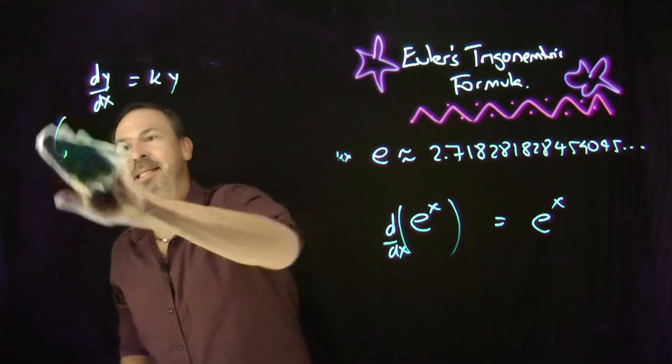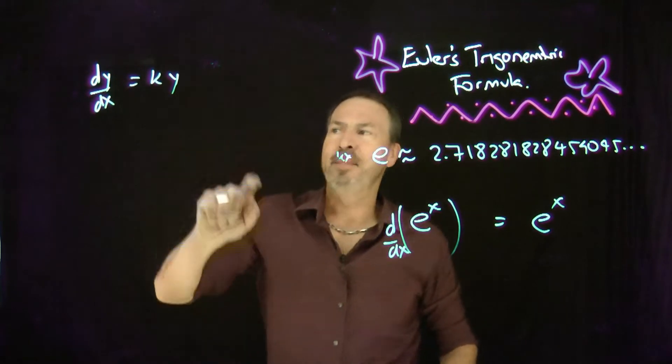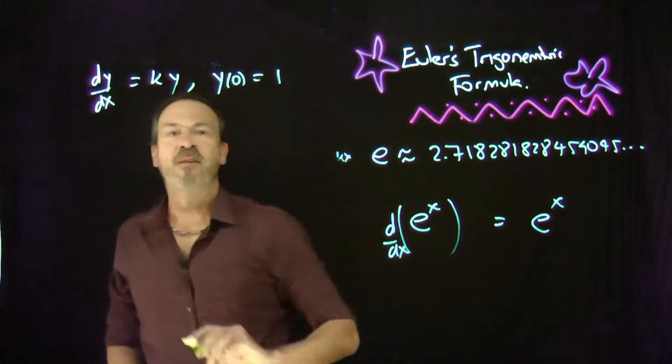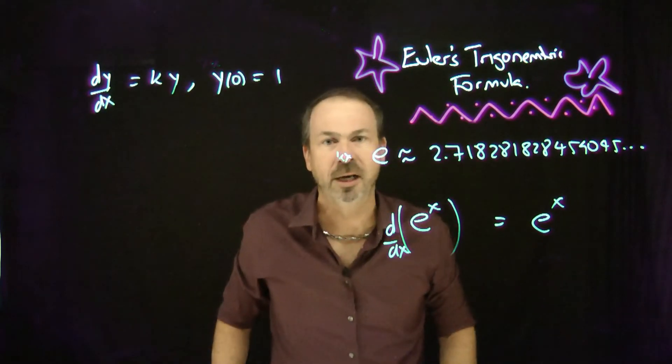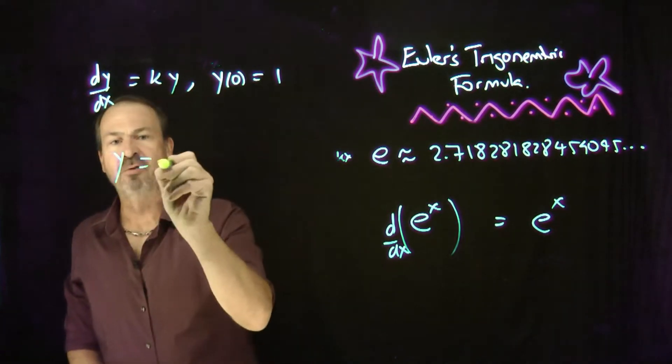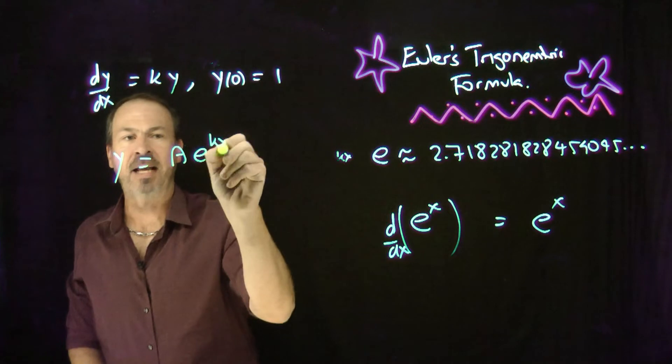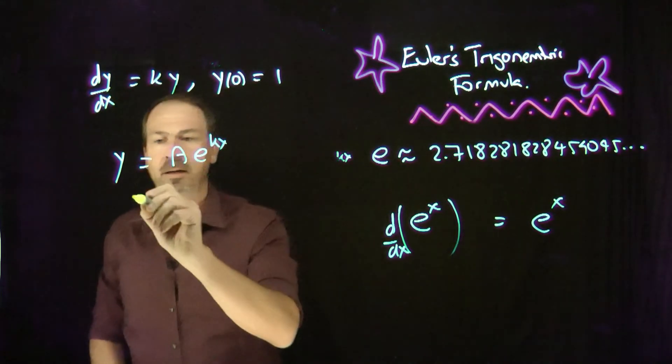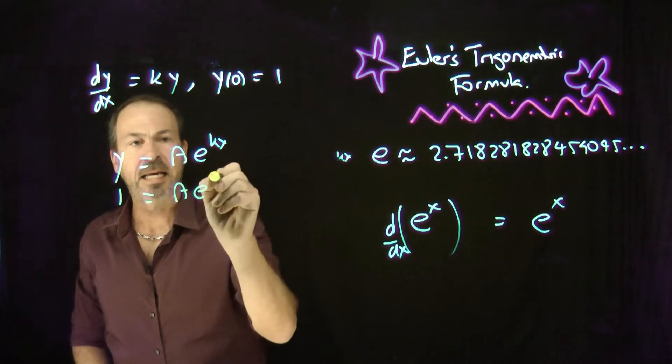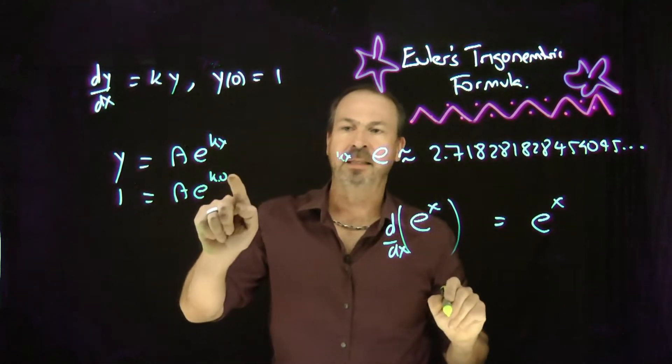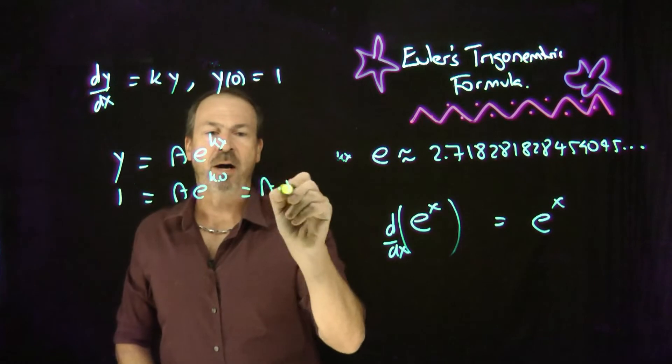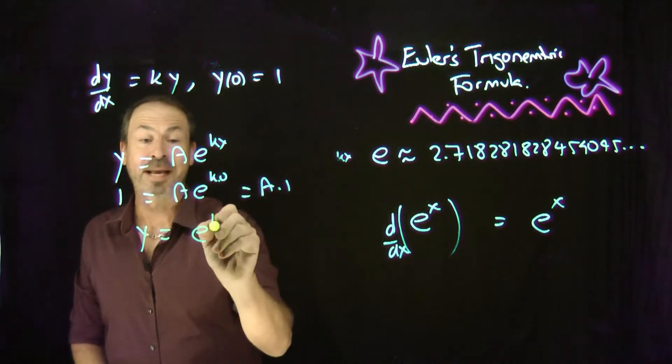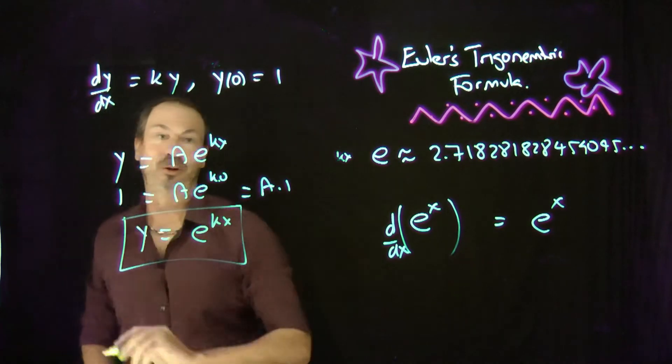But the way to pin down an answer - let me give you more information. I also want, at x equals 0, y to have the value 1. Let me give you an initial condition. So if you look at the general solution, a e to the kx, what does the initial condition tell me? Well, when x is 0, I want y to be 1. 1 equals a e to the k times 0. k times 0 is 0, e to the 0 is 1. That's just a times 1. Oh, a better be 1. So actually, my solution is now unique.